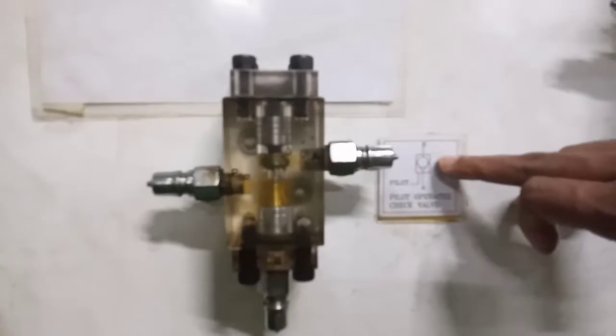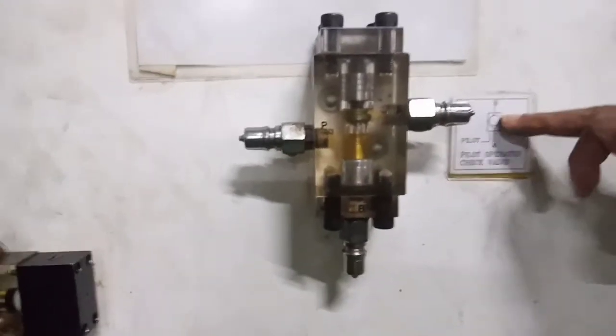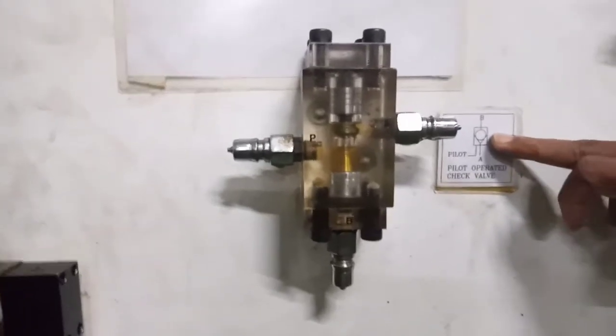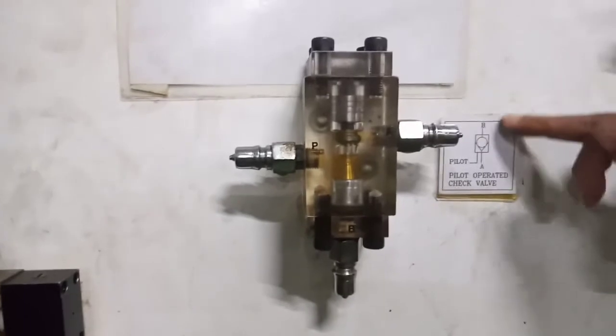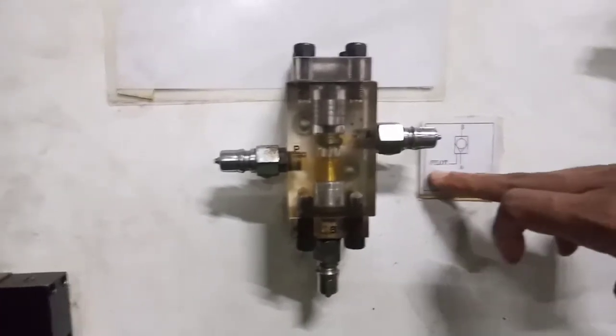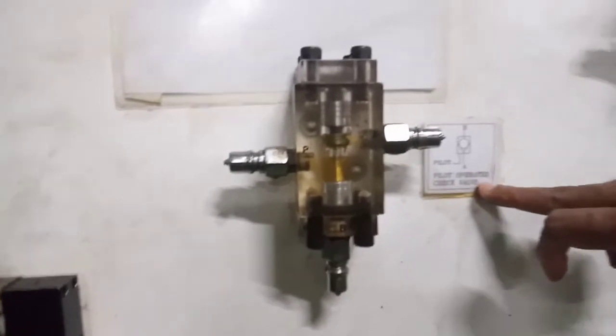It's like this. But if you give pilot pressure, so P port is shown here, then the reverse flow will also become possible. So, normal flow is from A to B. And reverse flow is blocked. But if you give pilot line pressure, then reverse flow that is B to A is also possible here. So, we have pilot operated check valve here.